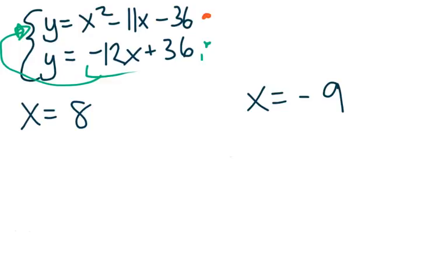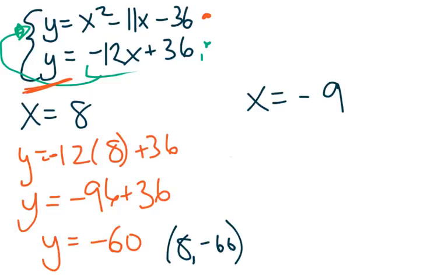Now it's time to plug these x values back into our original y equation to figure out what our y coordinates are at the solution point. So when x equals 8, y equals negative 12 times 8 plus 36. So if we work that one out, our first solution point is 8, negative 60.